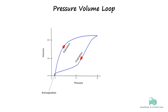Positive end-expiratory pressure is represented as the point where the loop begins and ends on the pressure axis, indicating the baseline pressure maintained in the lungs at the end of expiration. Peak inspiratory pressure is the highest point on the pressure axis during the inspiratory phase of the loop, reflecting the maximum pressure in the airways during inspiration.